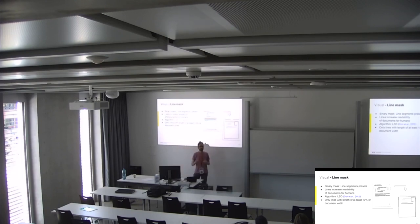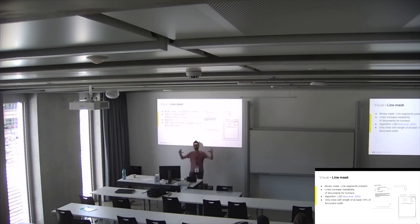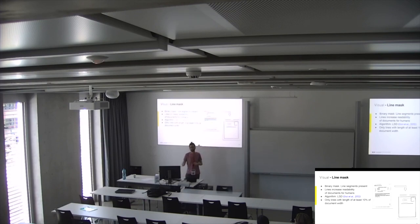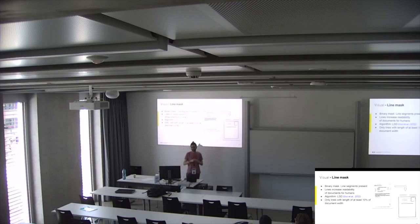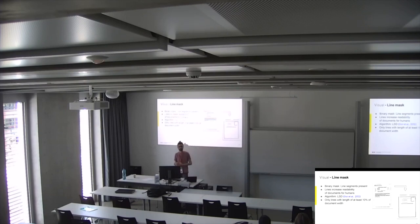For humans, lines are an important part of documents for readability. We try to incorporate lines because the CharGrid and BERTGrid representations contain no visual information outside of text. Using a line segment detector — a basic algorithm from computer vision — we search for lines and incorporate all found lines into a binary line mask. We must be careful not to incorporate text, so we only include lines that are at least 10% of the document width, since short lines could potentially leak text into the line mask.